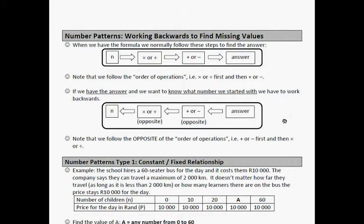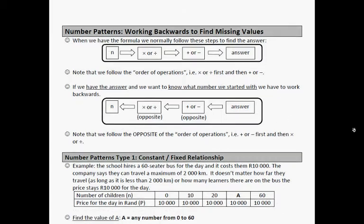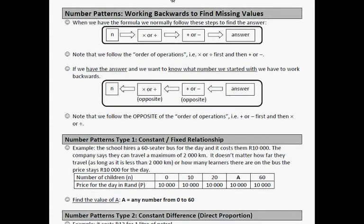Number patterns: working backwards to find missing values. When we have a formula, we normally follow these steps. So it's n, and then it's times or divide, and then there's a plus or a minus, and then there's an answer. So this is the order of operations. It doesn't matter in which order the formula is written. We will first do the multiply and divide, and then we will do plus and minus.